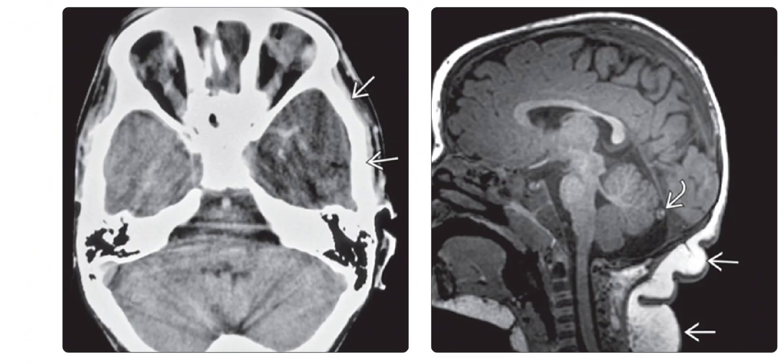On the left is the axial non-enhanced CT scan showing a middle cranial fossa arachnoid cyst in a patient with encephalocraniocutaneous lipomatosis. Note the expansion of the left middle cranial fossa by the cyst. This cyst is ipsilateral to the hemispheric atrophy and the scalp lipoma. Scalp lipoma is sometimes poorly seen by imaging.